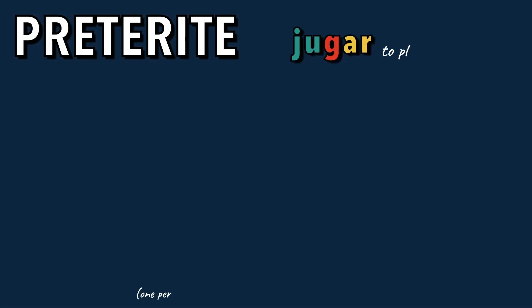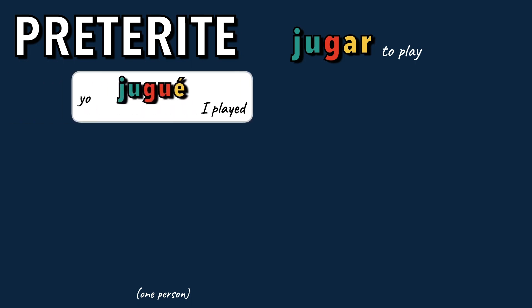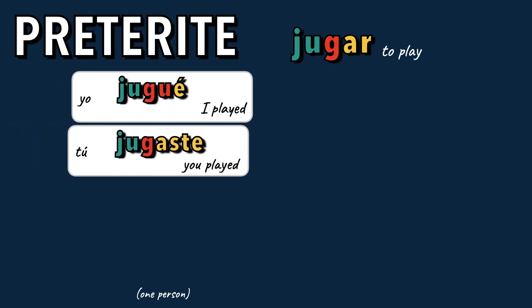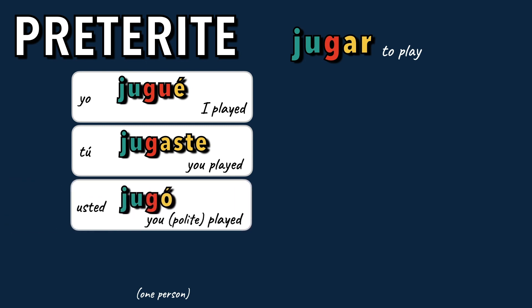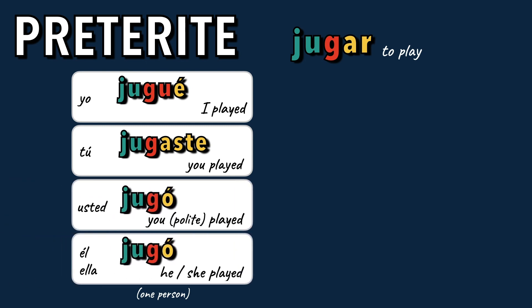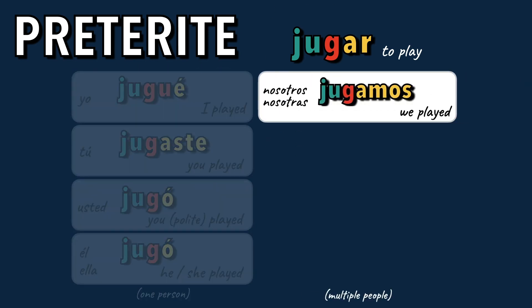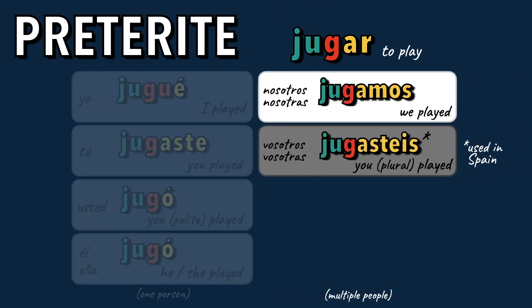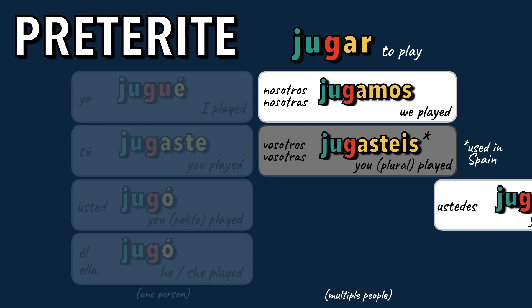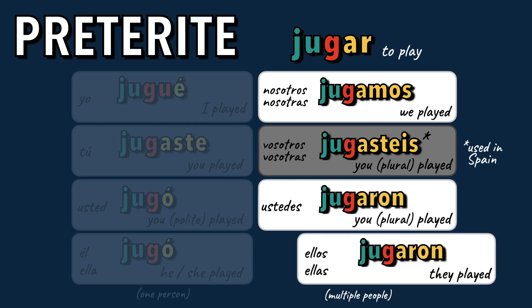A great example of this change is the verb jugar. Let's change it to the preterite to say different people played: jugué, jugaste, jugó, jugó. Notice there's a change in the yo form from G to GU before E to preserve the hard G sound. Jugamos, jugasteis, jugaron, jugaron.